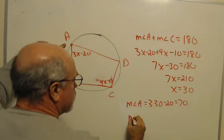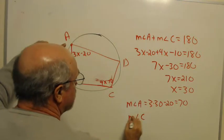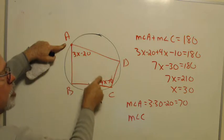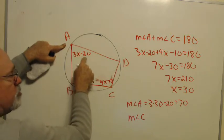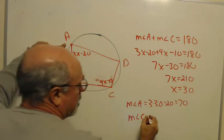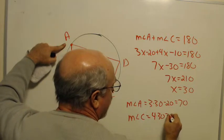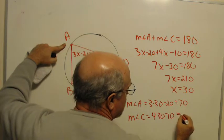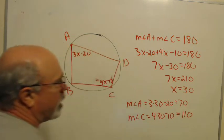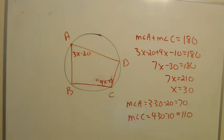And the measure of angle C, now we know it had better work out to 110, so that 70 plus 110 will be 180, and it will. This is going to be 4 times 30 minus 10, and that's 120 minus 10 is 110. And the two do add up to 180.